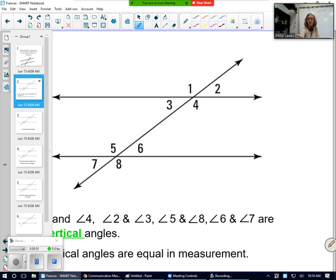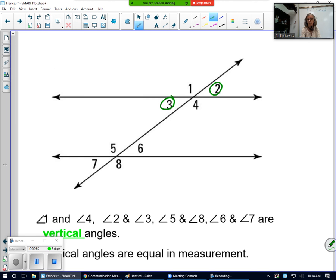Let me get my pen here and let's circle them so we can visualize what we're talking about. 2 and 3 are vertical, 6 and 7.